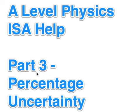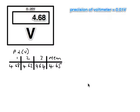Hello and welcome to part three of this A-level physics ISA help series. This time we're looking at percentage uncertainty. This is something that I've found a lot of students do tend to struggle with, but once you get the idea in your head, it is very possible to get it right every time.